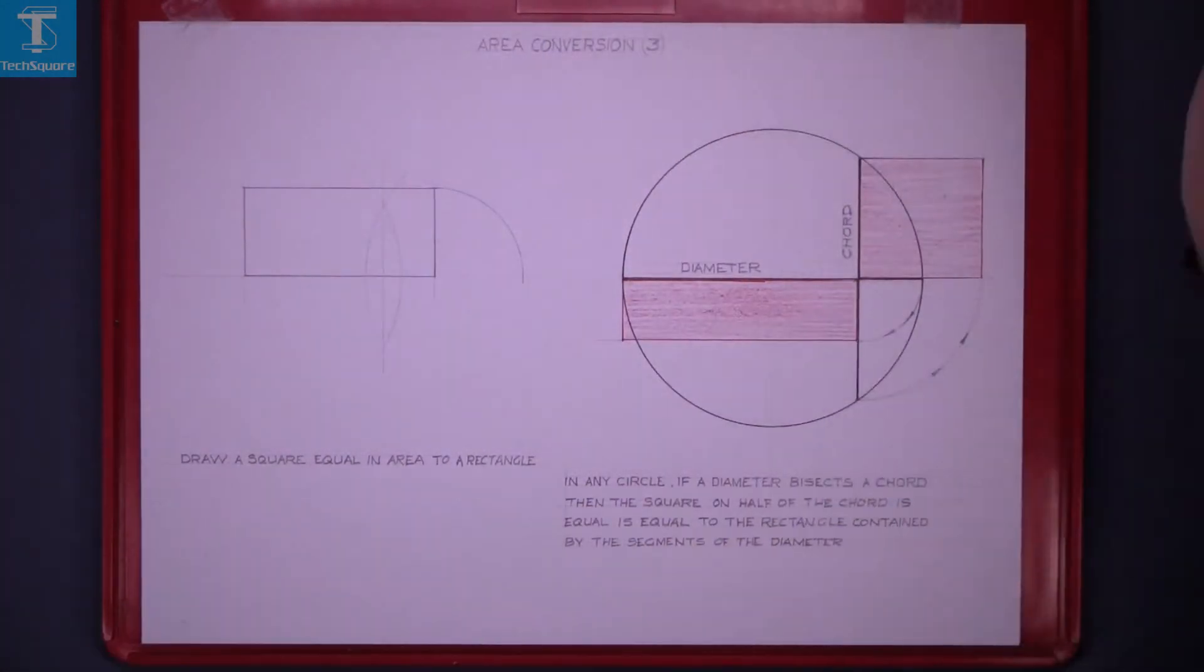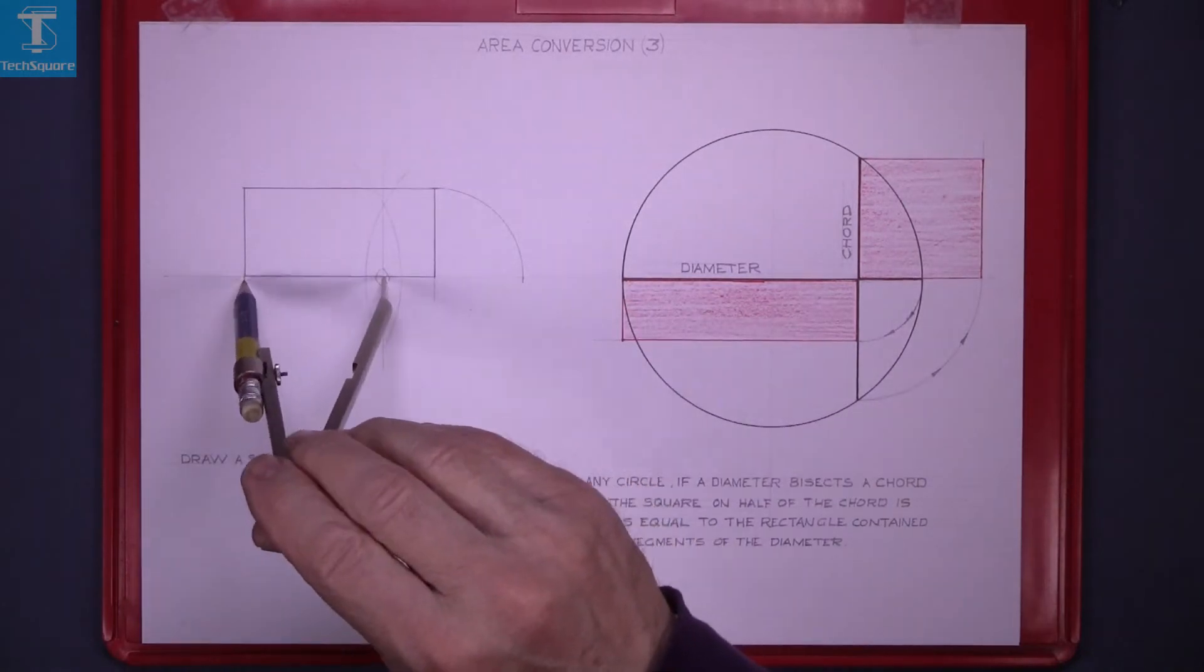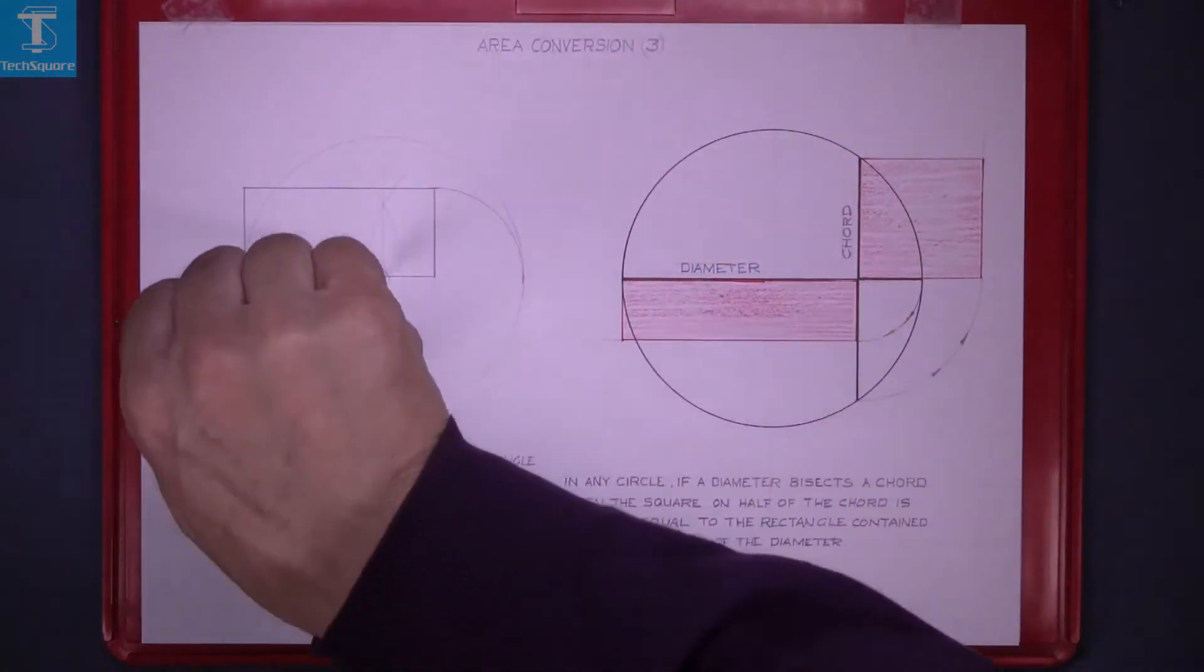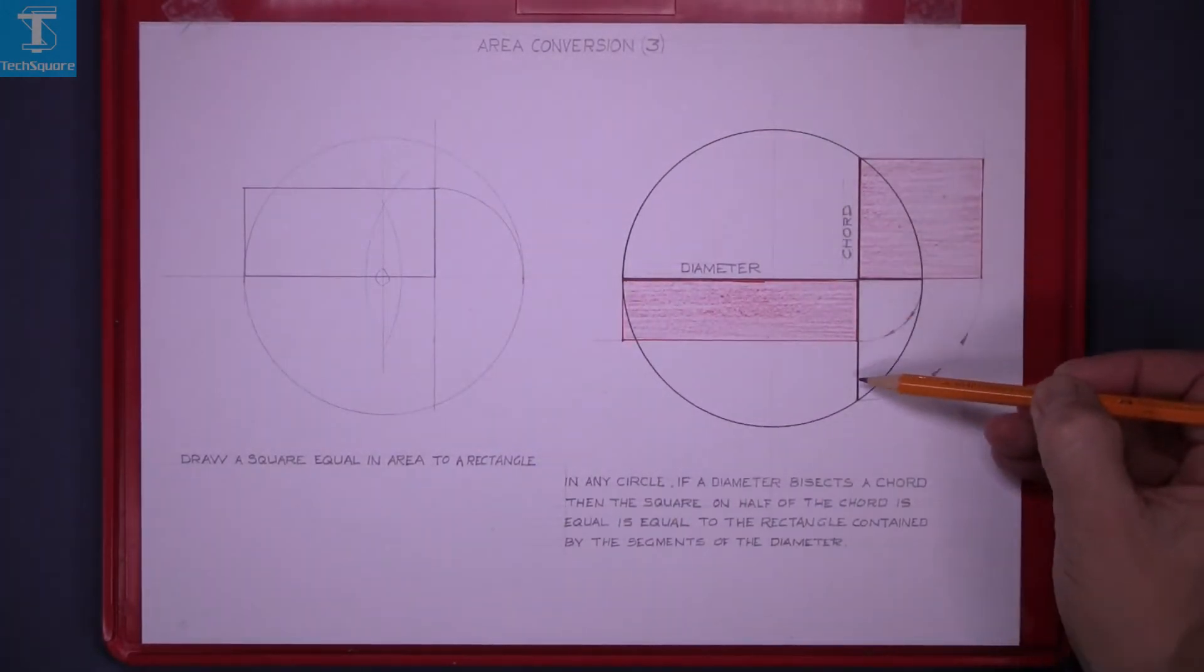Put the point of the compass in this center, set it to the end of the line and draw a circle. That line there is similar to this line here.